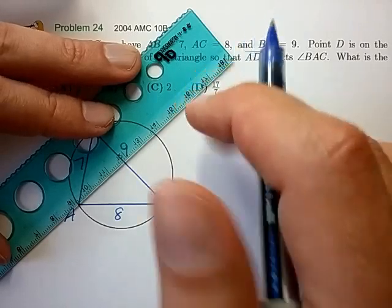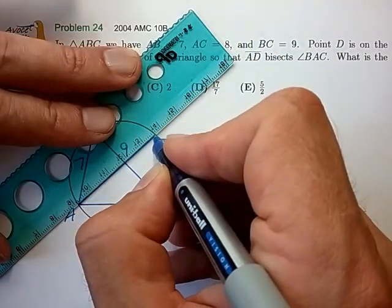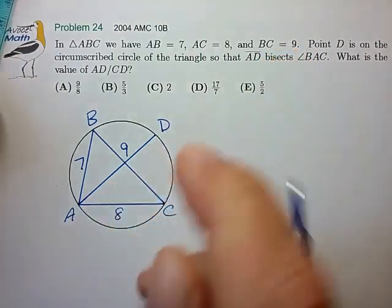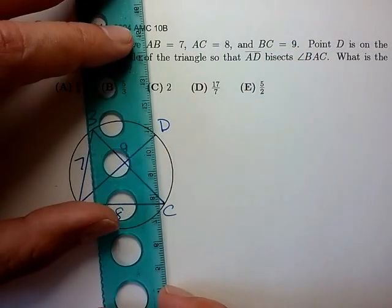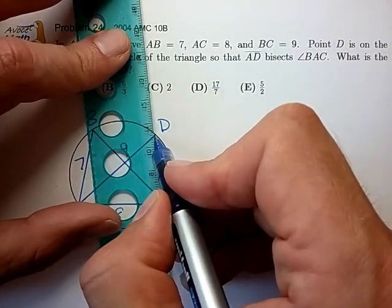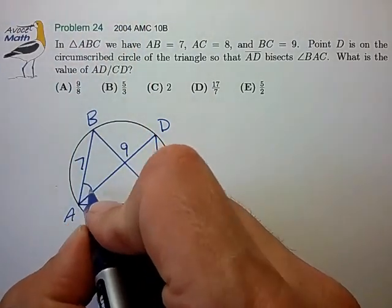So, we have the angle bisector AD roughly as shown, which then forms side AD. Great.